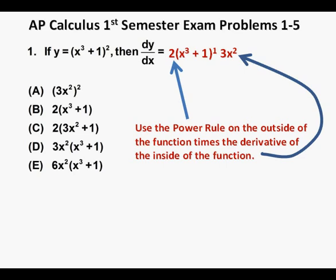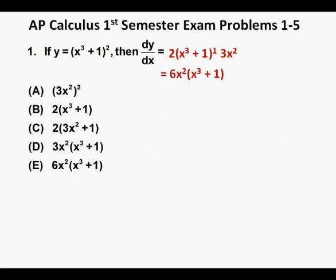So dy dx becomes 2 times quantity x cubed plus 1 to the first power times the derivative of the inside of the parentheses which would be 3x squared. In simplifying we have dy dx equals 6x squared times quantity x cubed plus 1. So we box in our correct answer and circle the corresponding answer choice answer e.